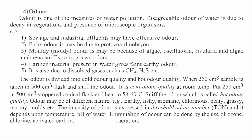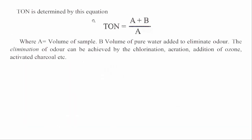The intensity of odor is expressed in threshold odor number (TON), and it depends upon temperature and pH of water. Elimination of odor can be done by the use of ozone, chlorine, activated carbon, or aeration. TON is determined by the equation: Threshold Odor Number = (A + B) / A, where A equals the volume of sample, and B equals the volume of pure water added to eliminate odor. The elimination of odor can be achieved by chlorination, aeration, addition of ozone, or activated charcoal.